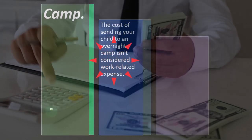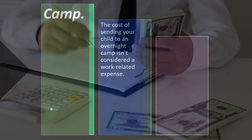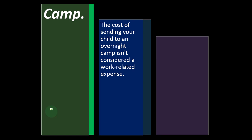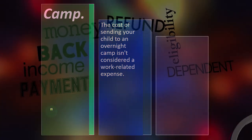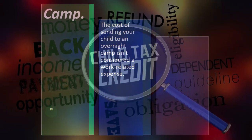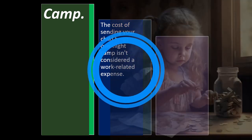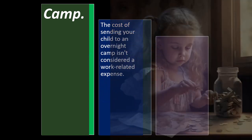We are continuing on with the child and dependent care expenses credit, noting that this is different from the child tax credit. The child tax credit is fairly straightforward — you have a qualifying child and get the credit. The child and dependent care credit relates to child care expenses incurred so that the taxpayer is able to work.